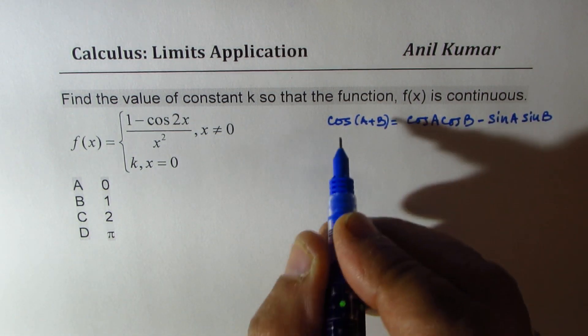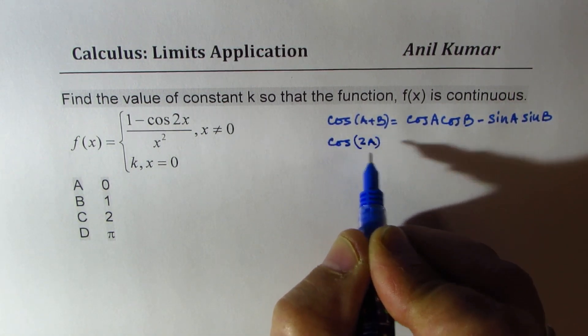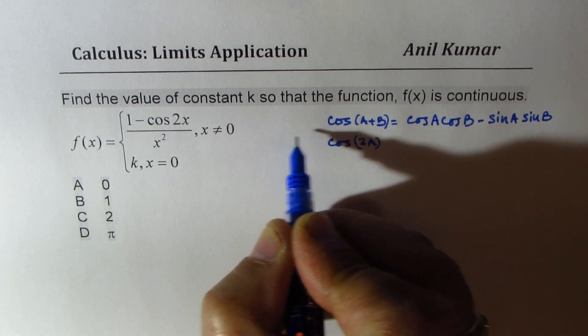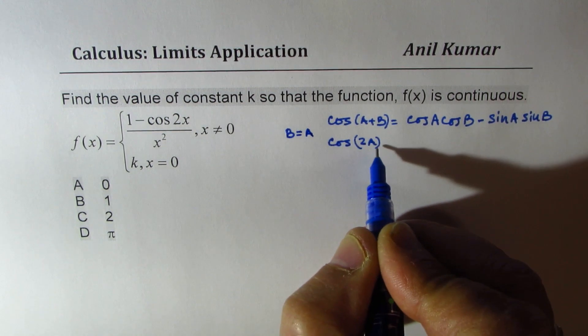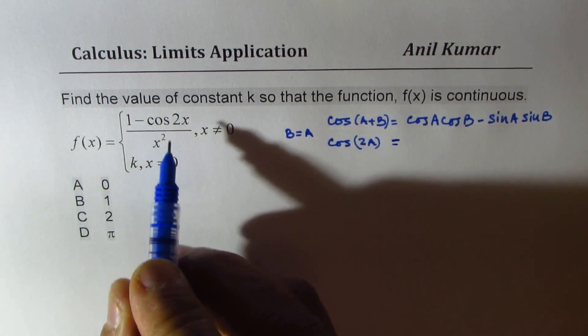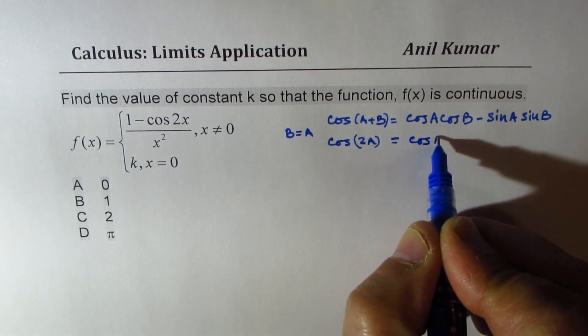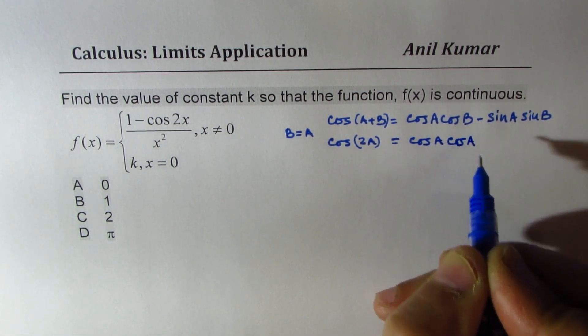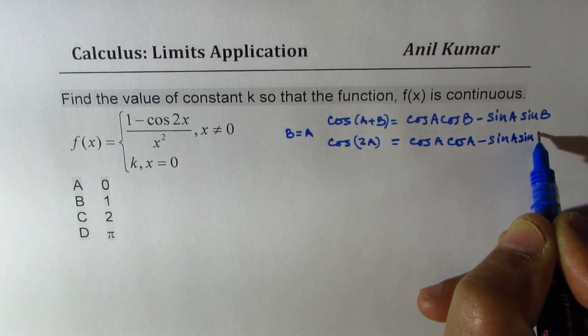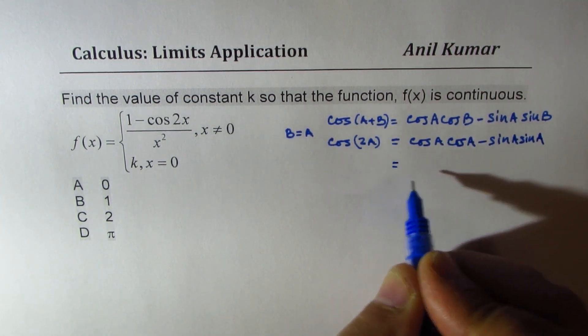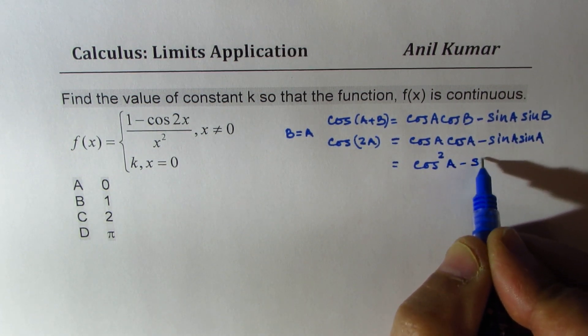If I write b equals to a then I could also write this as cos of 2a. So what I've done here is that I've replaced b with a, so it becomes a double angle, right? So 2a. So this becomes cos a and b is a so it becomes cos a again minus sin a sin a. So that is to say it is cos squared a minus sin squared a.